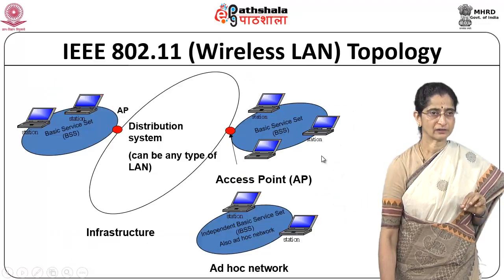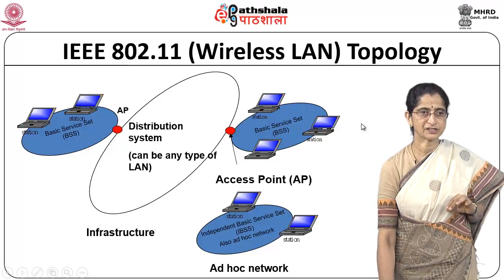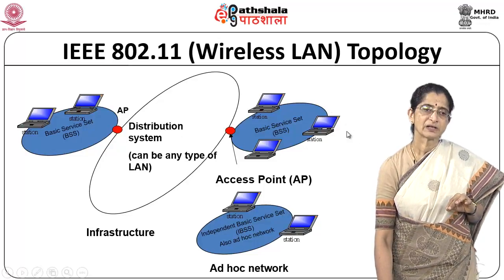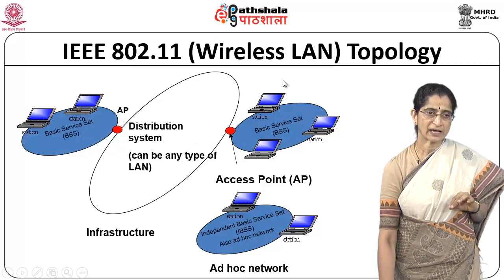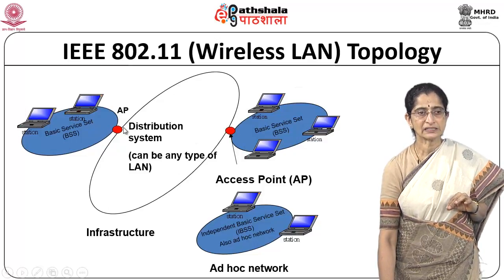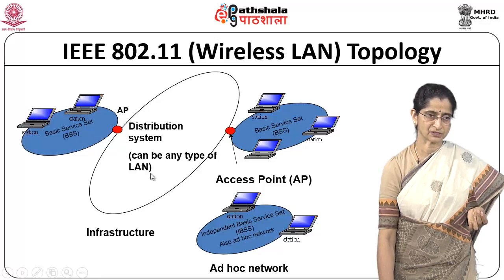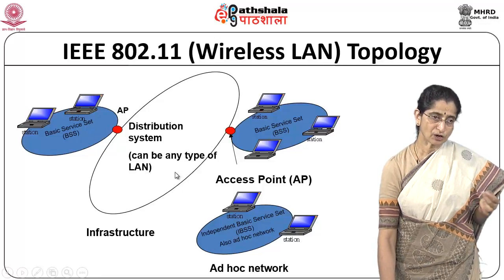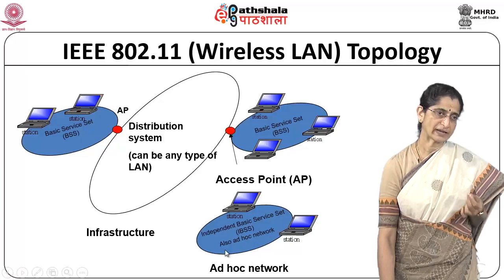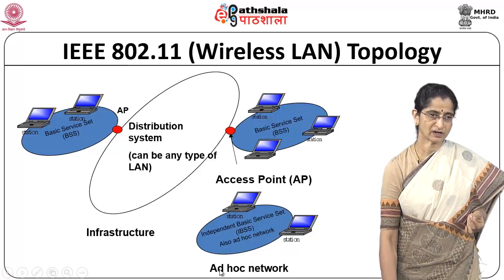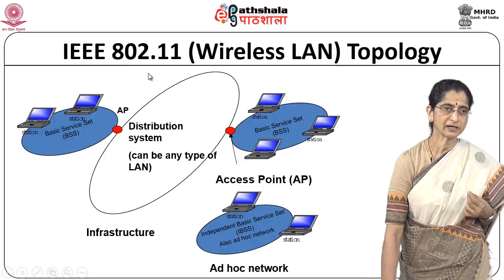Looking at the 802.11 wireless LAN topology: access points are connected to various mobile stations. An access point together with the mobile stations it connects to is called a basic service set (BSS). Multiple BSSs are connected by means of a distribution system, which could be any type of LAN. An access point not connected to a distribution system forms an independent basic service set — an ad hoc network. Both infrastructure and ad hoc modes are supported by 802.11.